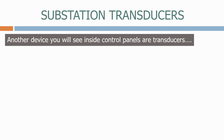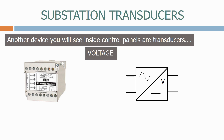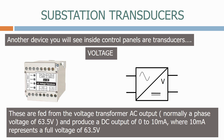Another device you will see inside control panels are transducers. The first type is a voltage transducer. Here's the symbol we normally use. These are fed from the voltage transformer AC output, normally a phase voltage of 63.5V, and produce a DC output of 0-10mA, where 10mA represents a full voltage of 63.5V.